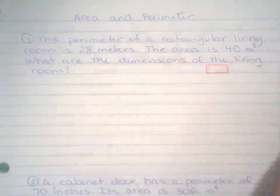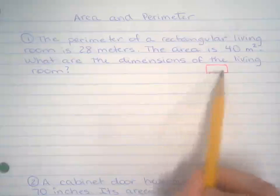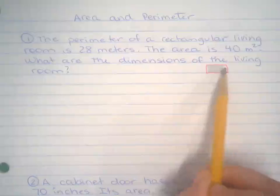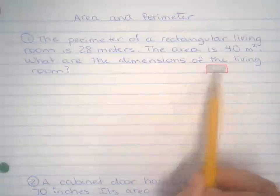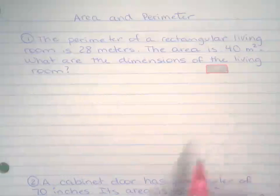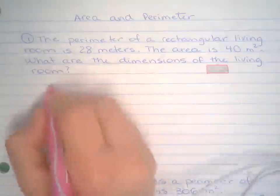So the perimeter is 28 meters. The area of that same living room, the area is what goes inside, like the carpet to take care of that living room floor. The area is what goes inside, is 40 square meters. What are the dimensions of the living room? You're like, I don't even know where to start.